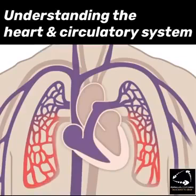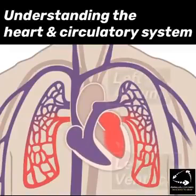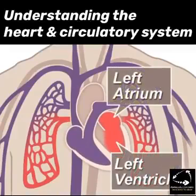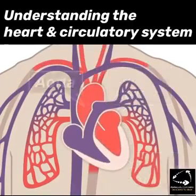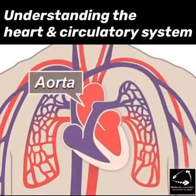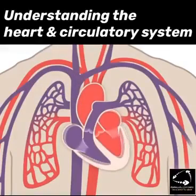Blood is converted into oxygenated blood and then transported back into the left atrium, left ventricle, and then via one massive contraction, squeezes out of the aorta and around to the body to serve oxygenated blood around the entire body.